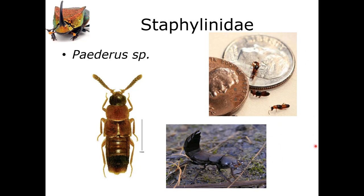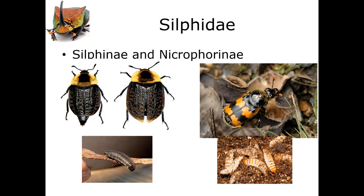Otherwise they're completely innocuous — kind of fun to watch. I've seen bodies where you roll them over and there's just a whole mess of rove beetles underneath. The easiest way to tell the rove beetle from anything else: this big pronotum and these little stumpy elytra. So you can see most of its abdomen. It has a variety of different antennae, but little teensy tiny elytra.